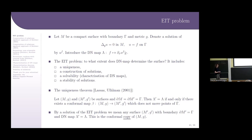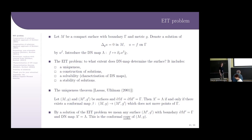By a solution of the EIT problem we mean any surface M prime with given boundary gamma and given Dirichlet-to-Neumann map lambda. Such a solution is a conformal copy of the original surface M. The next question is how to construct such a copy from the DN map.